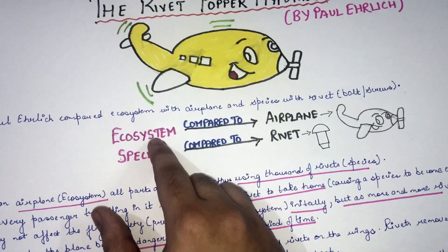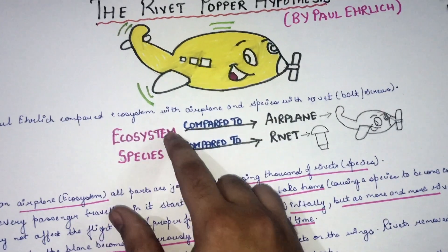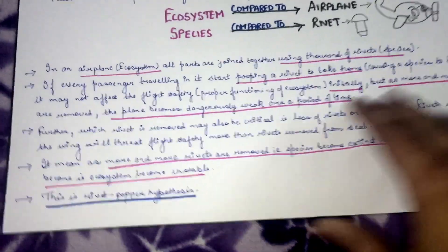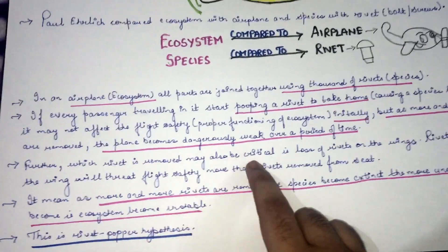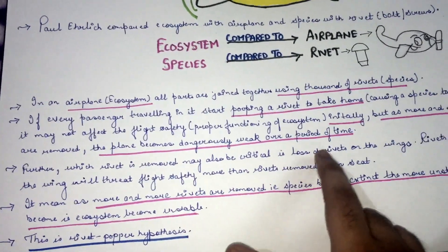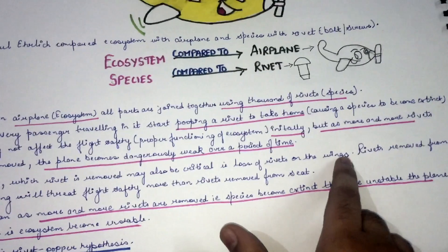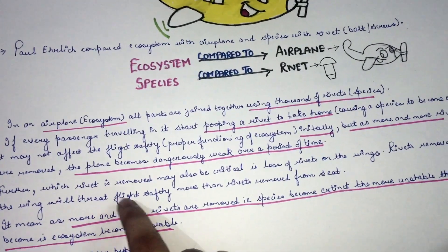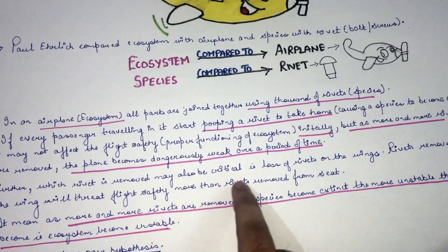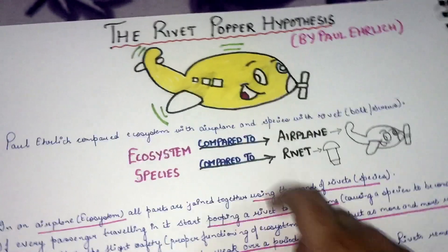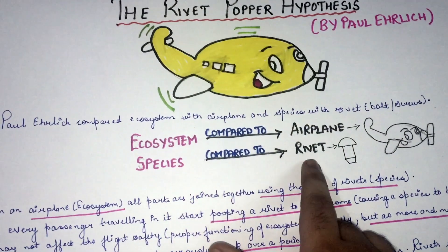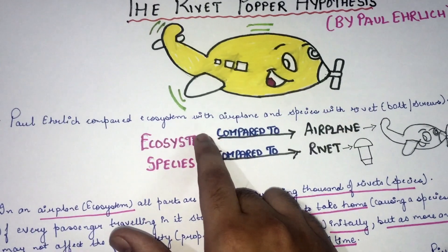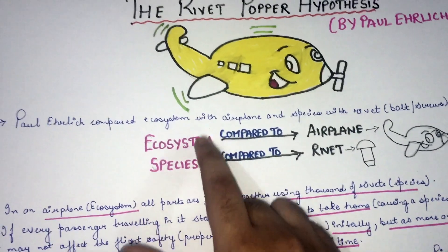Further, which rivet is removed may also be critical. Loss of rivets on the wing will be a greater threat to flight safety than rivets removed from the seat. Similarly, which species becomes extinct is also important — if a key species is removed, it will affect ecosystem stability more than the removal of a non-key species.